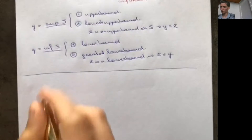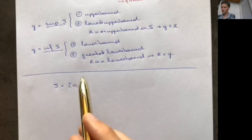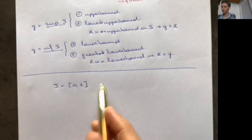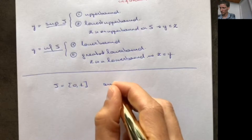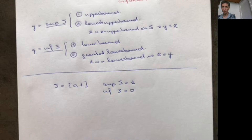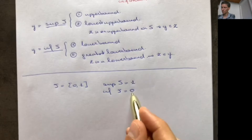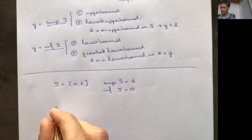Let me give an example. If S is equal to [0, 1], we know it's bounded from above — for example, 2 is an upper bound. So what's the smallest number greater or equal to any number in this interval? In this case, the supremum of S will be equal to 1. It's an upper bound and it's the smallest upper bound you can find. The infimum of S here will be equal to 0.